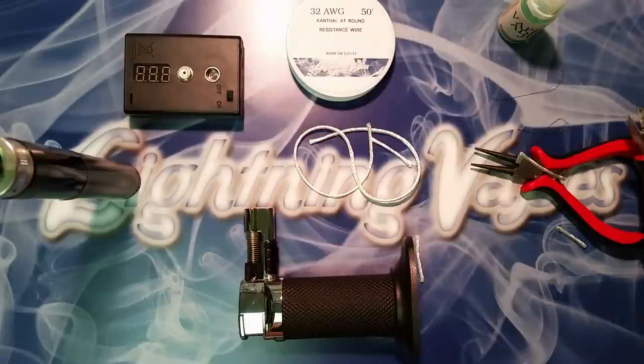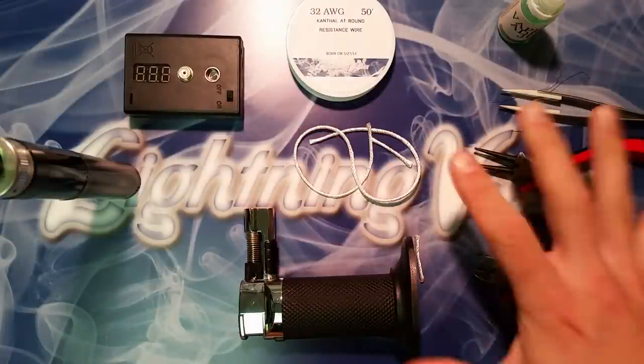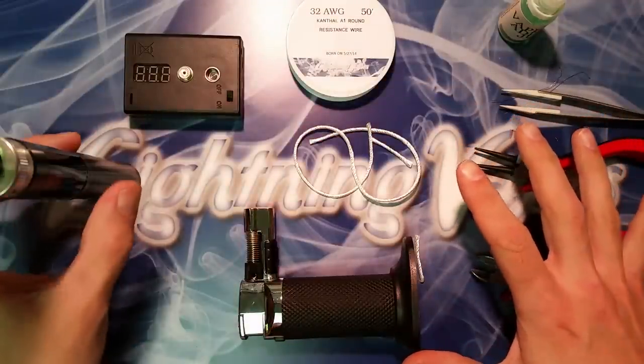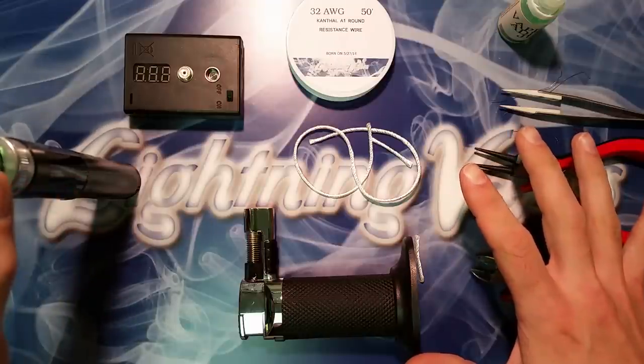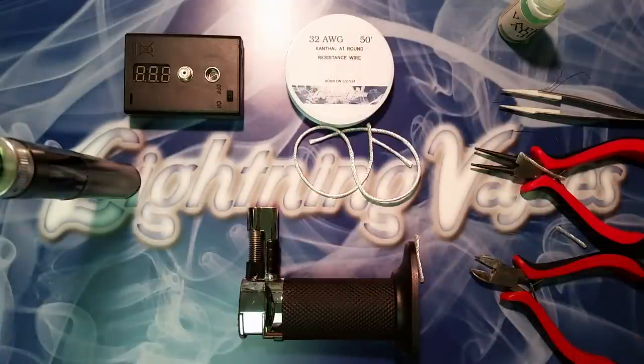Okay, well folks, that concludes the tutorial for today. Again, everything you see here, save for the EVIC Supreme and the Nautilus tank, can be purchased at lightningvapes.com. I hope you guys have a fantastic day.